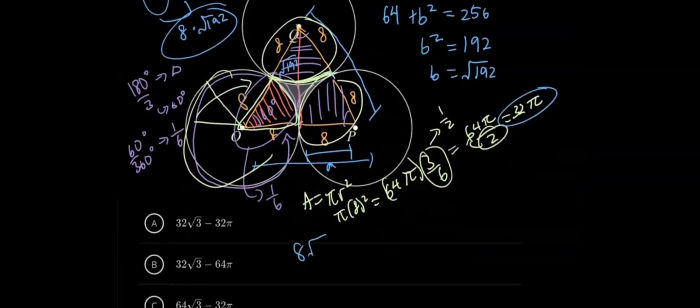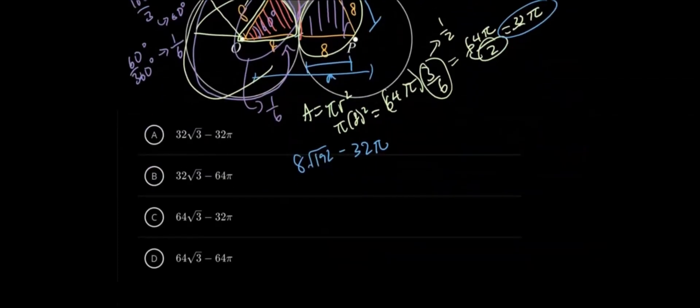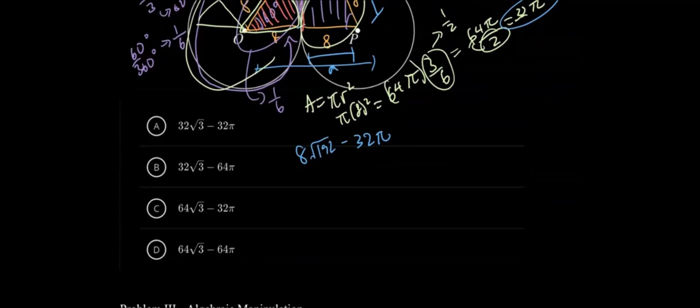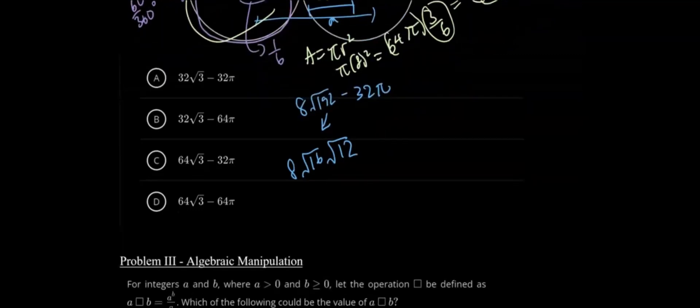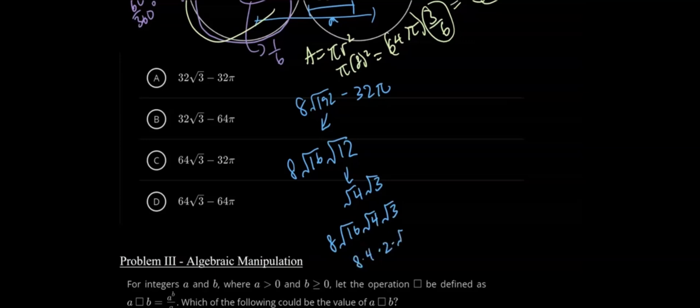So our answer should be 8 square root of 192 minus 32 pi. But we're not finished yet because that's not one of the answer choices. A problem like this requires simplification, and you may have to simplify radicals many times on your SAT test. We need to pull square numbers out of 192. It's divisible by 16, so 192 equals 16 times 12. We can split 12 into square root of 4 times square root of 3. Therefore, we get 8 times square root of 16 times square root of 4 times square root of 3, which equals 8 times 4 times 2 times square root of 3. We get 8 times 8, which is 64 times square root of 3. So our answer is 64 square root of 3 minus 32 pi. That is option C.